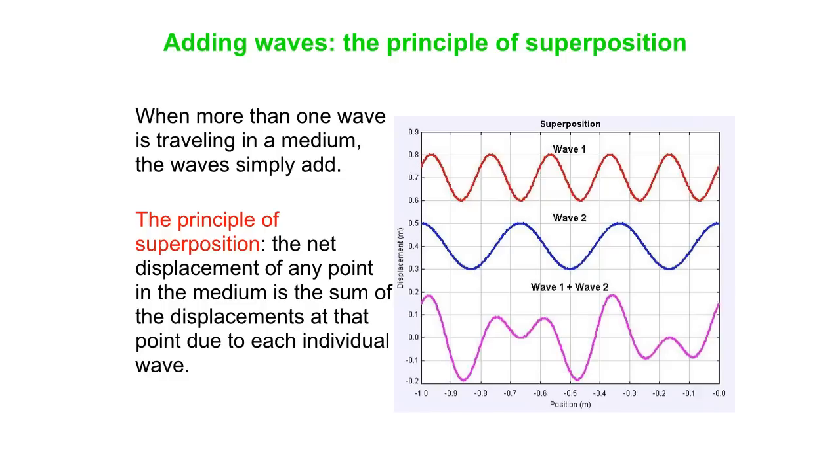So the net displacement of any point is the sum of the displacements due to each individual wave.